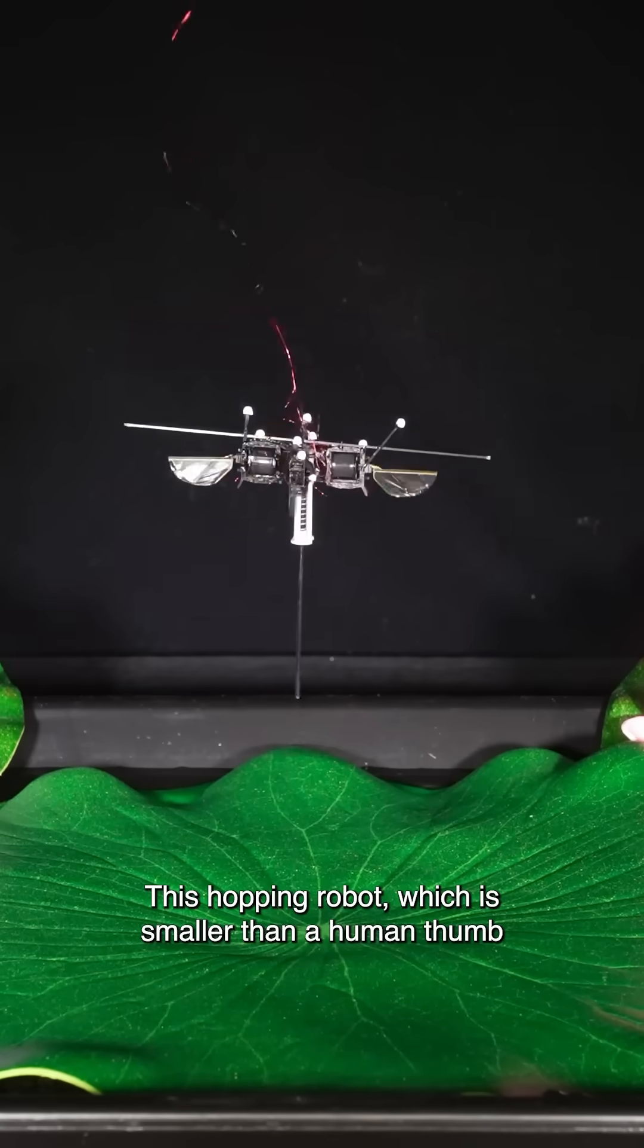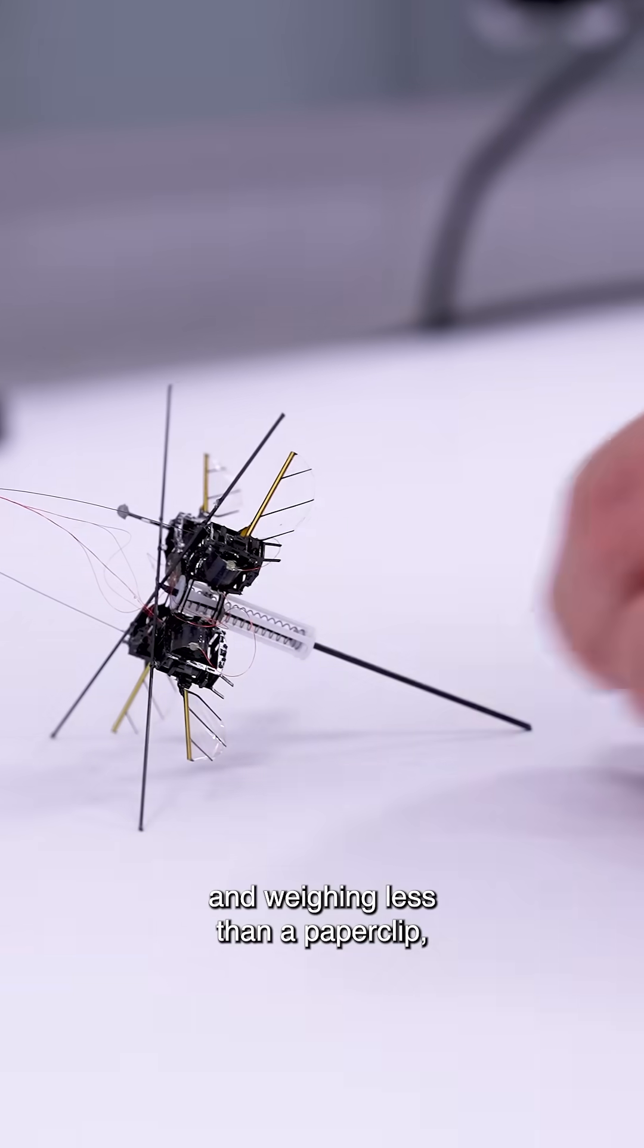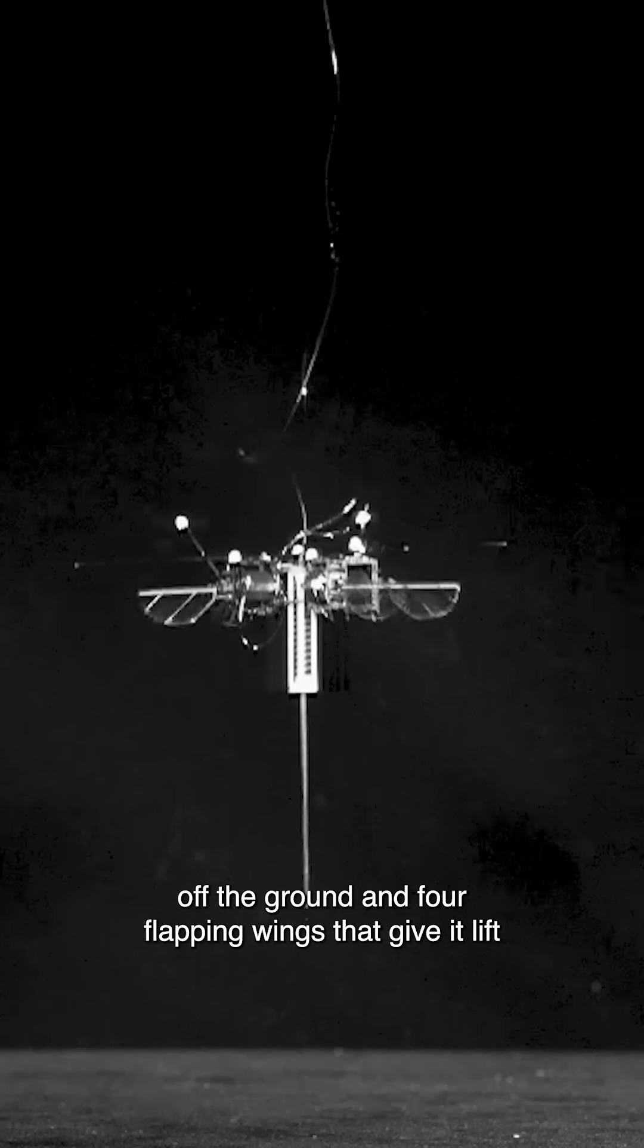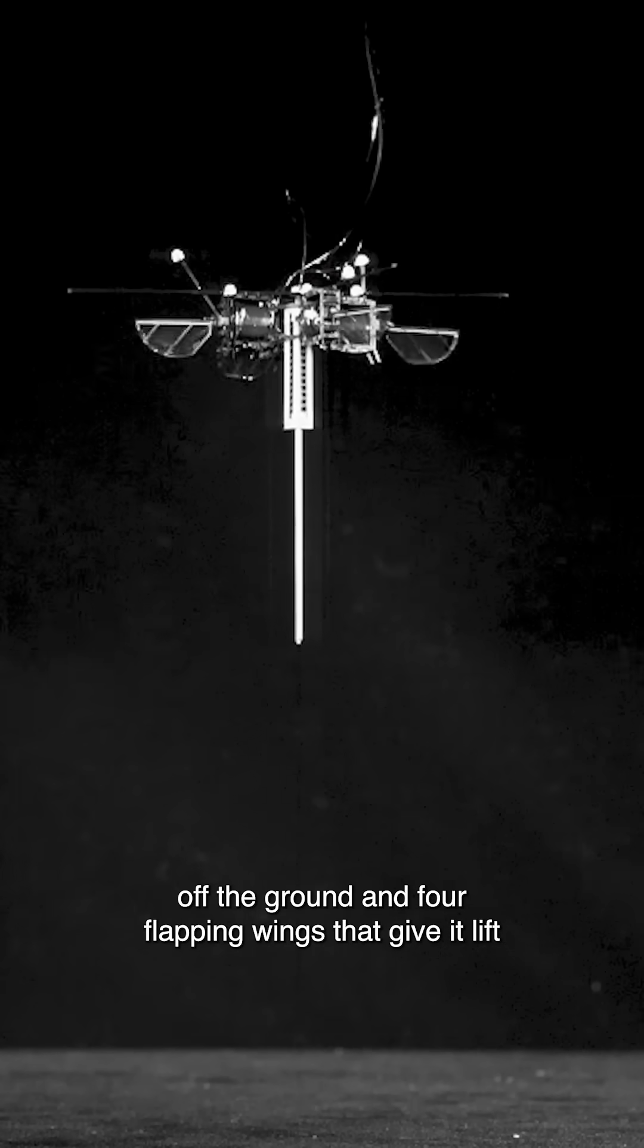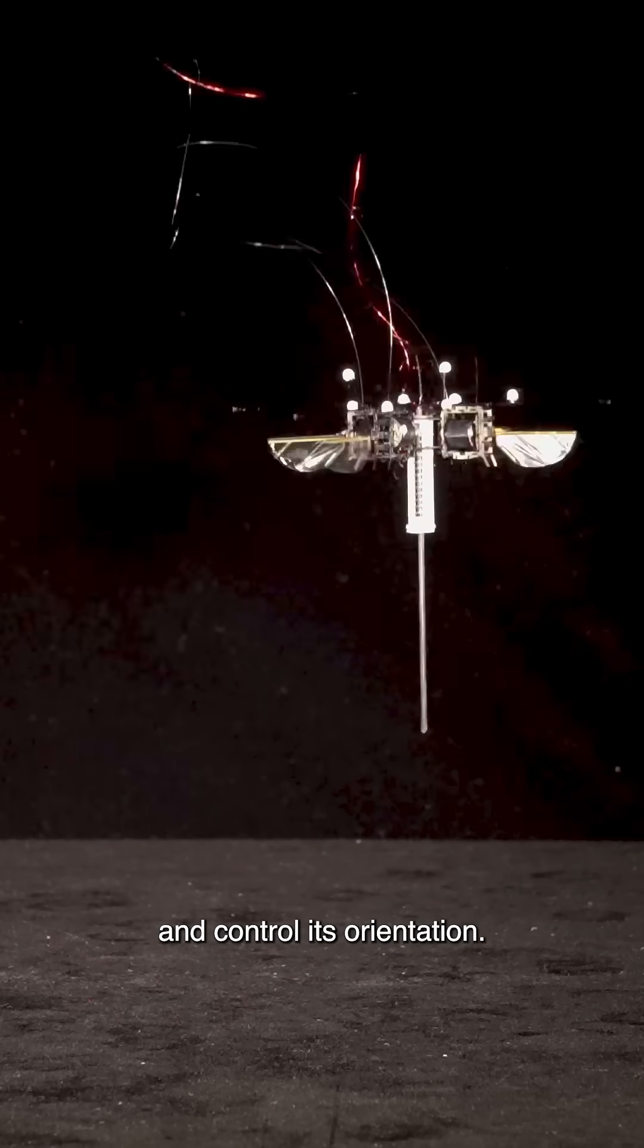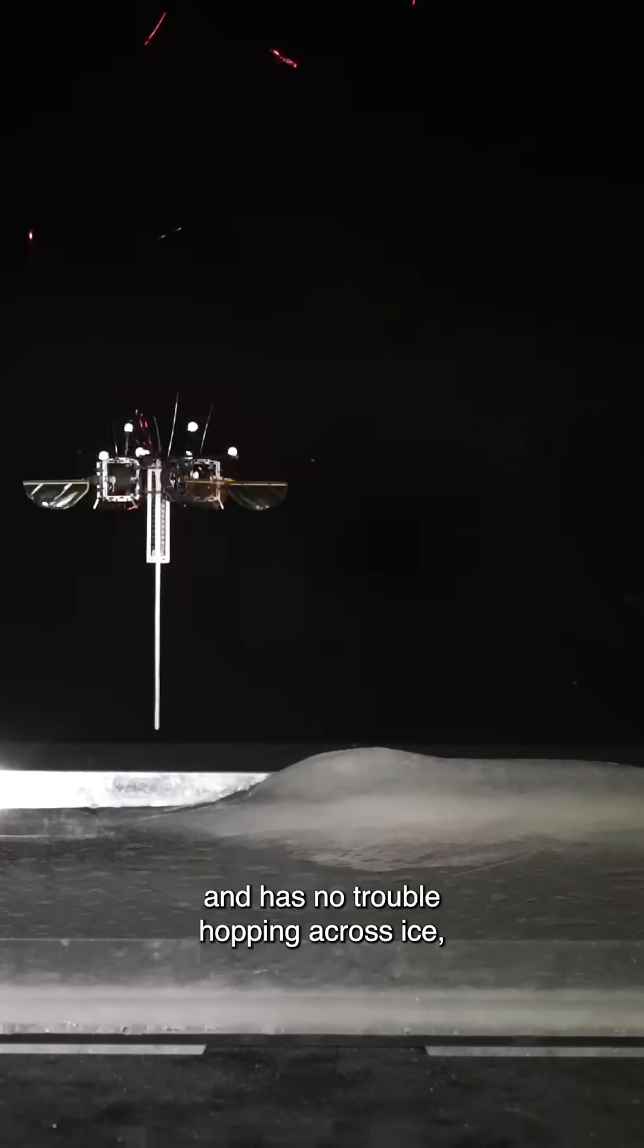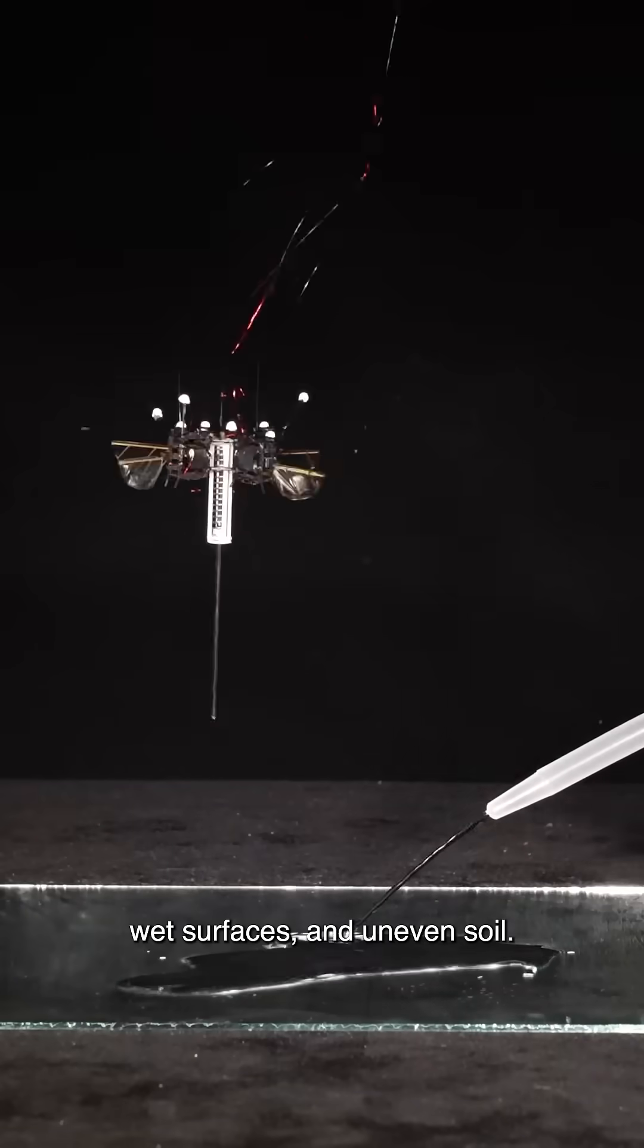This hopping robot, which is smaller than a human thumb and weighing less than a paperclip, has a springy leg that propels it off the ground and four flapping wings that give it lift and control its orientation. The robot can jump up to four times its height and has no trouble hopping across ice, wet surfaces, and uneven soil.